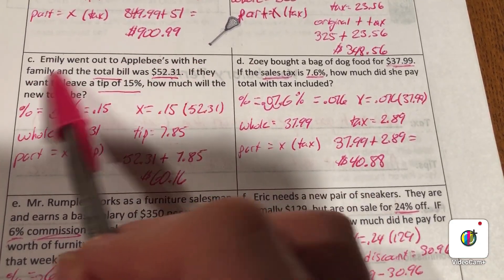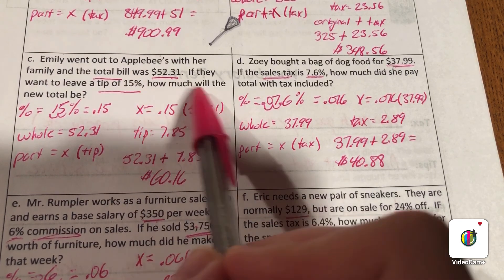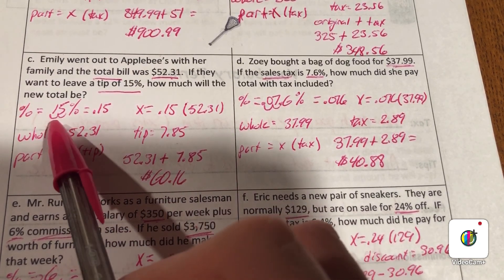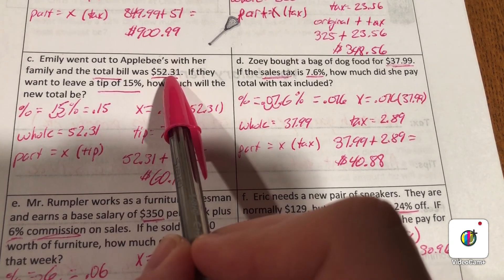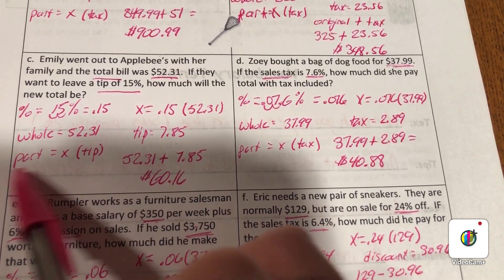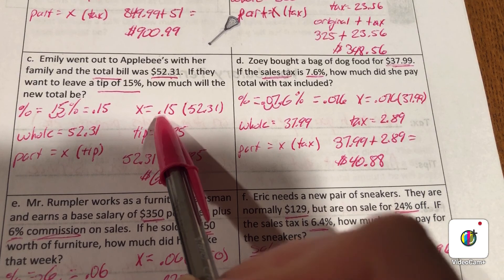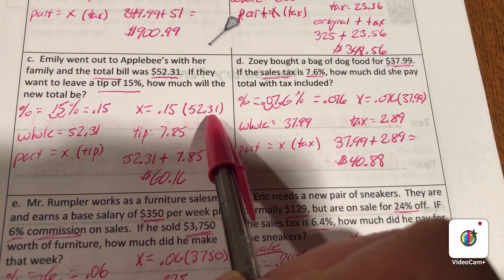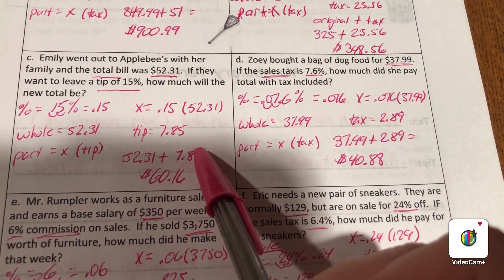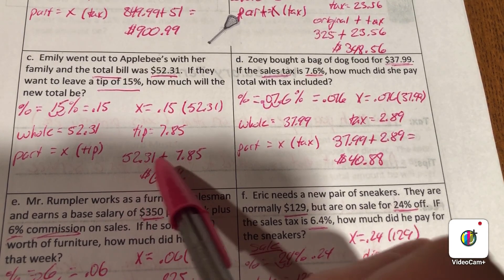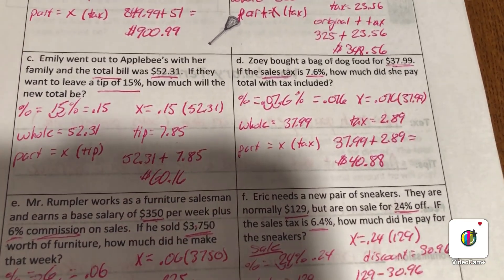Emily went out to Applebee's with her family and the total bill was $52.31. If they want to leave a tip of 15%, how much will the new total be? 15% as a decimal is 0.15. The whole is how much the bill was, $52.31, and the part is the tip we're looking for. So x is 0.15 times $52.31, so their tip is going to be $7.85. We're going to add the tip plus the original amount, so $52.31 plus $7.85 to get $60.16. This is how much they'll be paying for their bill with tip.